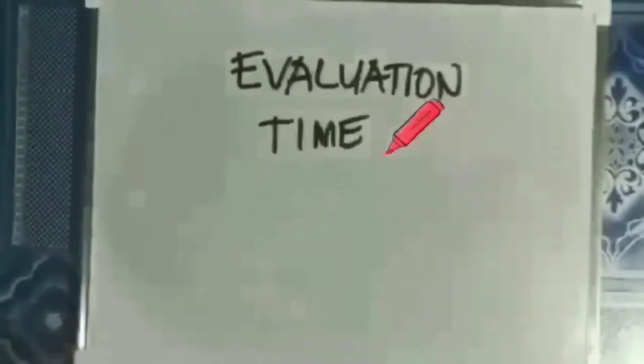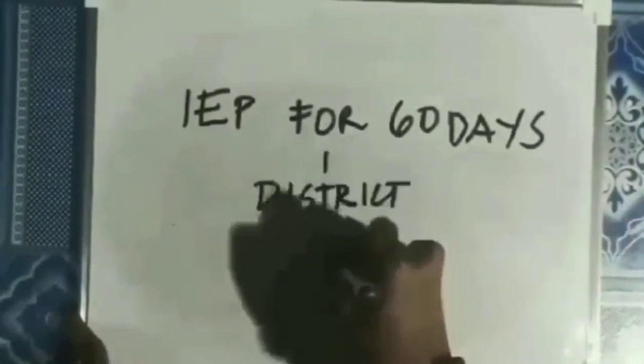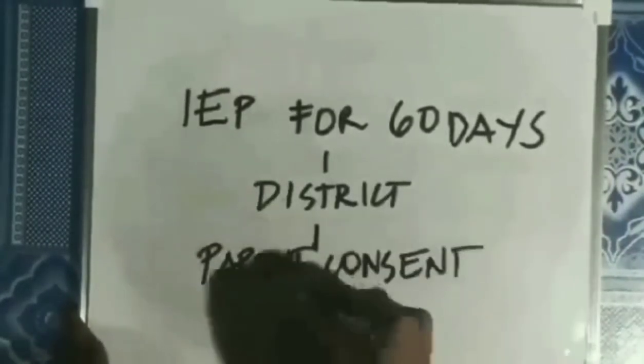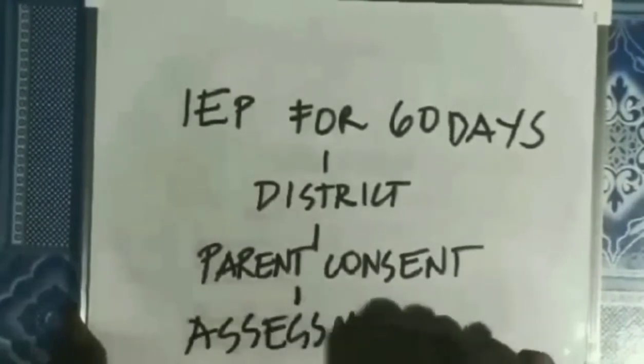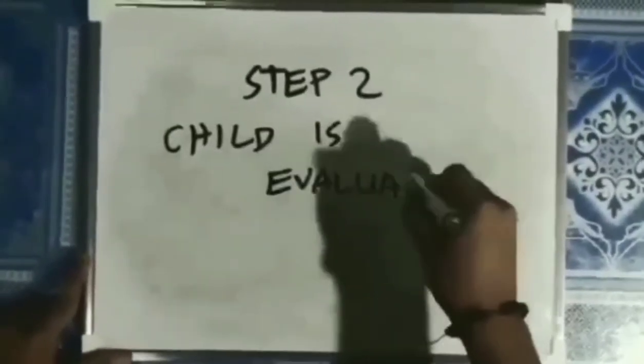Evaluation timeline: The IEP meeting must be held within 60 days from when the district receives written parental consent for the assessment. Step 2: Child is Evaluated.